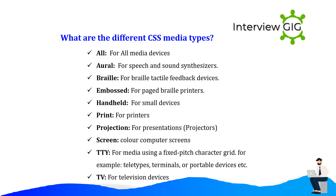What are the different CSS media types? ALL — for all media devices; Aural — for speech and sound synthesizers; Braille — for Braille tactile feedback devices; Embossed — for paged Braille printers; Handheld — for small devices; Print — for printers; Projection — for presentations and projectors; Screen — for color computer screens; TTY — for media using a fixed-pitch character grid such as teletypes, terminals, or portable devices; TV — for television devices.